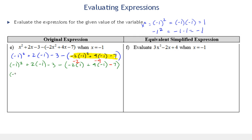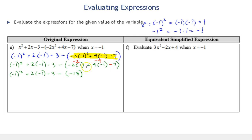Now copying the first part — (negative 1)² plus 2 times negative 1 minus 3 — minus the result of the second group. Negative 2 plus negative 4 is negative 6; negative 6 minus 7 is negative 13. So the second group evaluates to negative 13, and we're subtracting it. Do side work by hand and verify on your calculator to avoid errors.